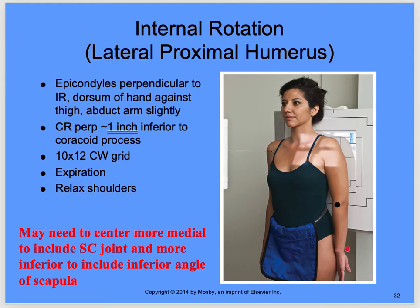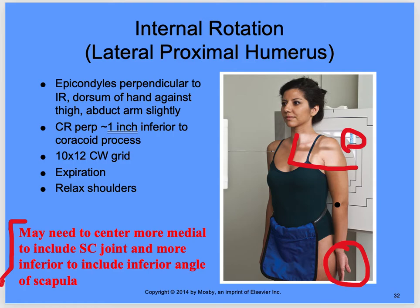For lateral rotation, the dorsal aspect of the hand is against the thigh. You're slightly abducted. Center to the jugular notch. The marker is in the correct spot, up and out of the way. Central ray is one inch inferior to the coracoid process. Keep in mind you may need to center more medial to include the SC joint, and more inferior to include the inferior angle of the scapula. Relax the shoulders, and always expose on expiration — take a deep breath in, let it all the way out, don't breathe, don't move.